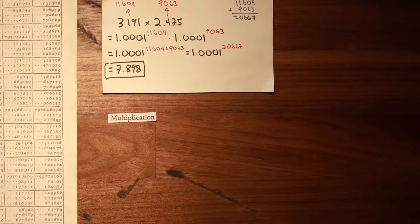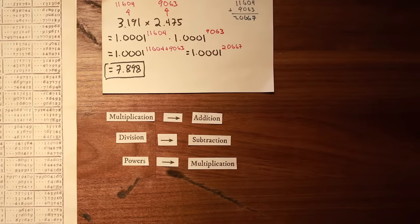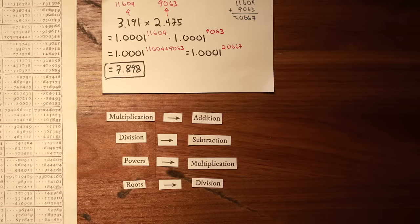But wait, there's more. Berge's table not only converts multiplication into addition, it also changes division into subtraction, exponentiation into multiplication, and root finding into division.